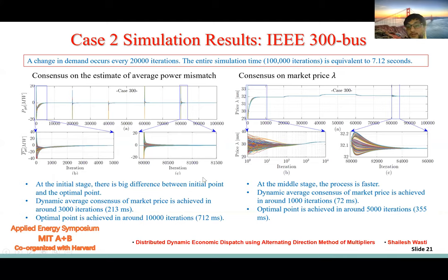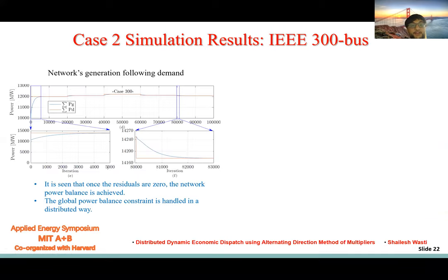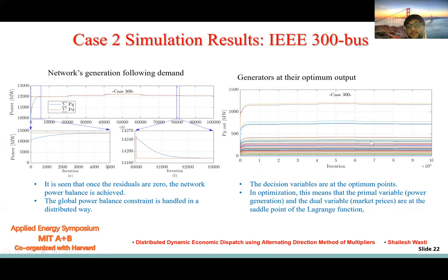Obviously, with the larger network, it takes a little while. The entire simulation setup took just 7.12 seconds, but still these iterations are carried in milliseconds. Similarly, once the residuals go to zero, the power balance is ensured, and these are for all 69 generating units, the generators at their optimum decision point.